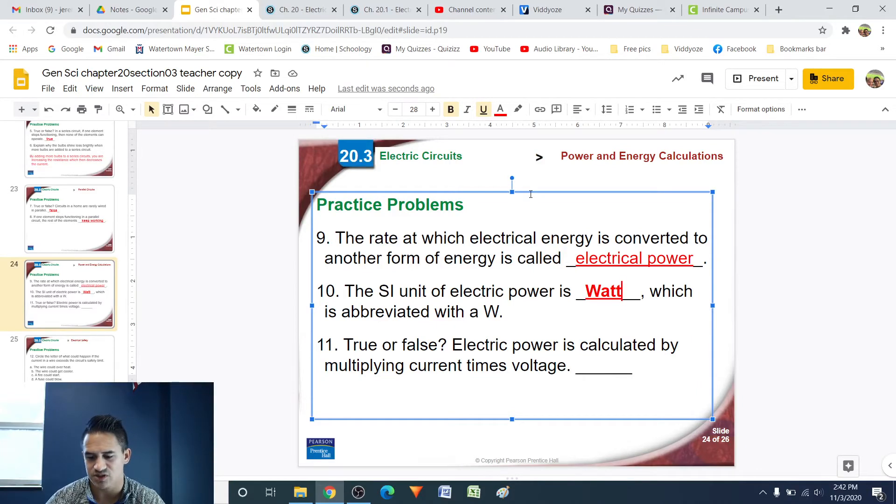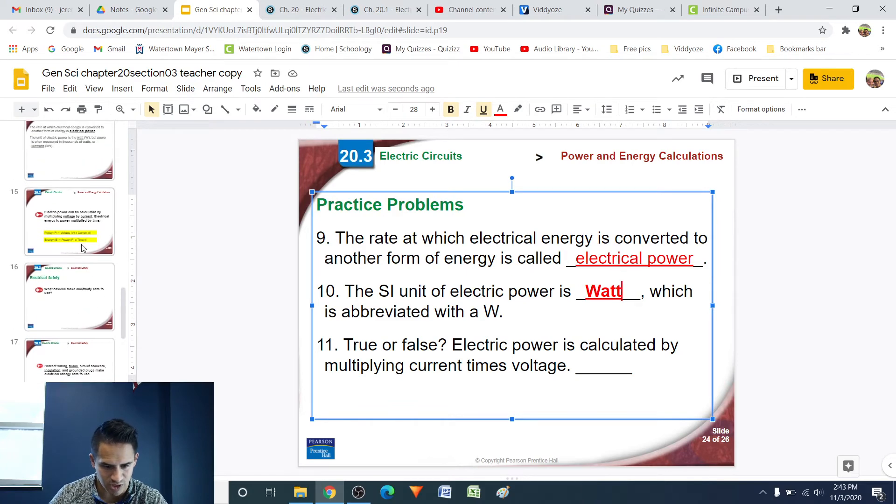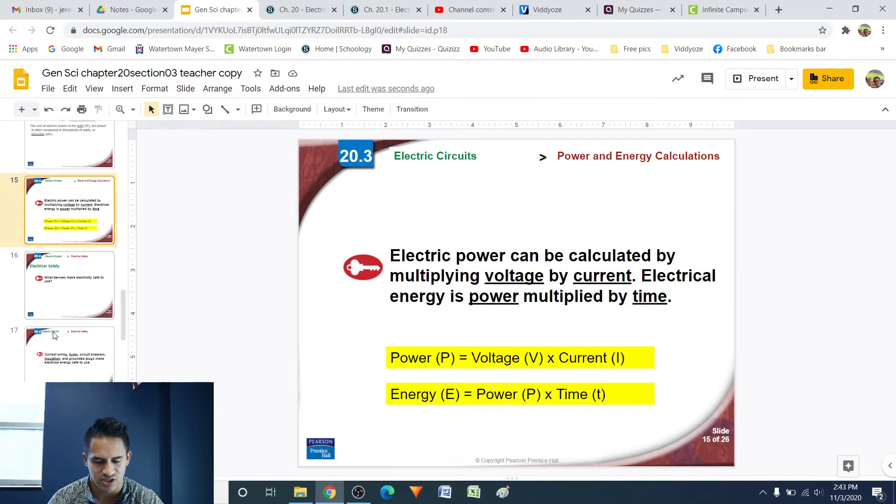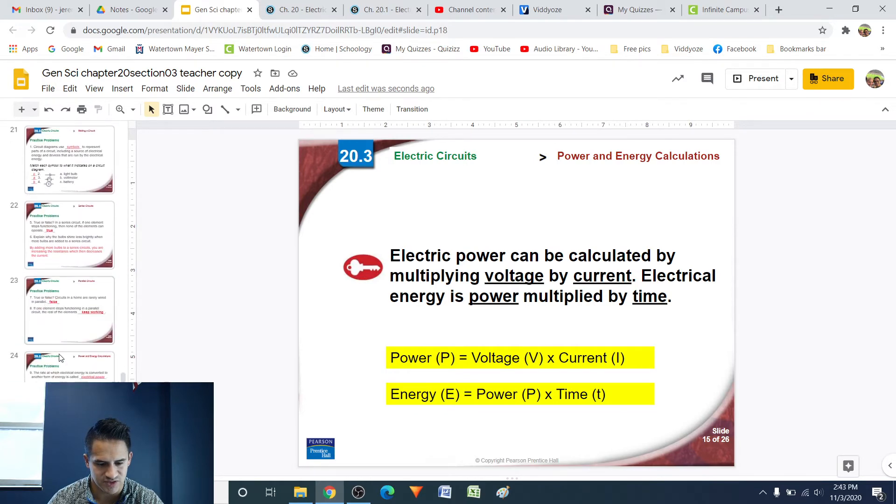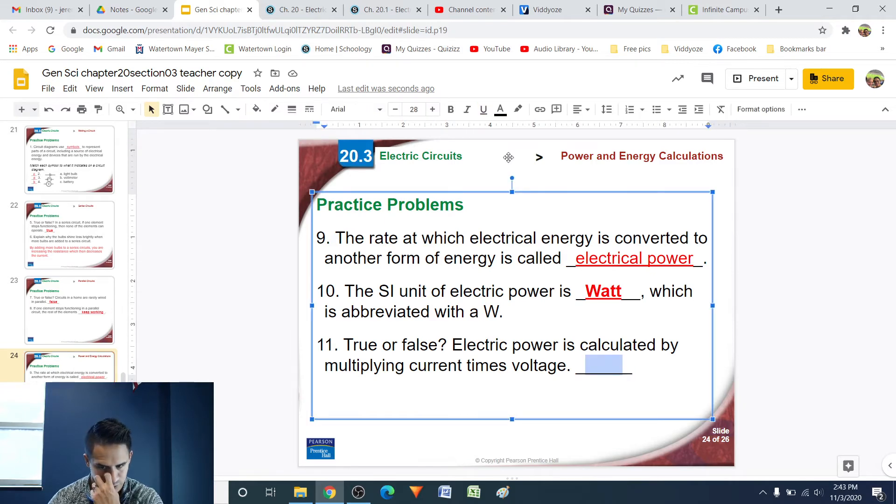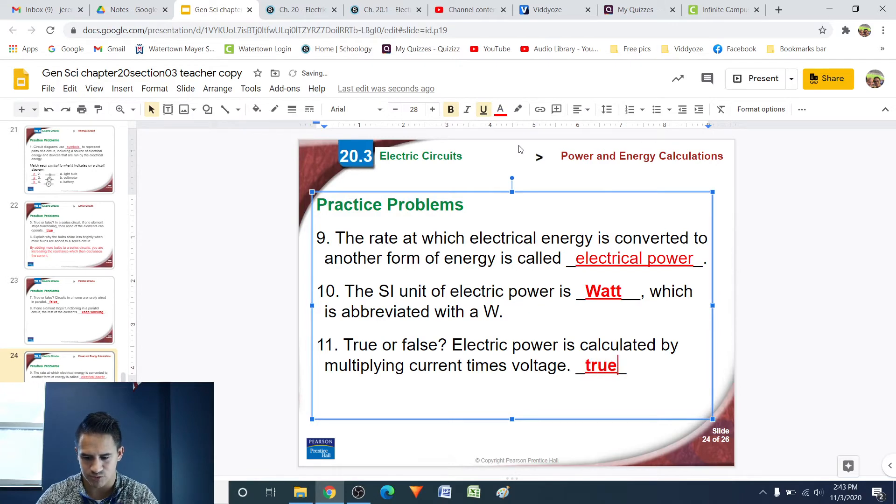Number 11, true or false, electric power is calculated by multiplying current times voltage. Well, let's just go take a look. So, electrical power, to determine our power, we have an equation right here. It is voltage times current, which I think in the question it even says that electric power is calculated by multiplying current times voltage. So, yeah, that is true. You can just go look that up, and yeah, no problem right there. True.